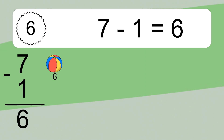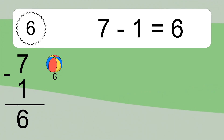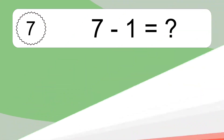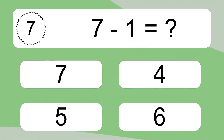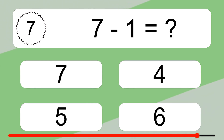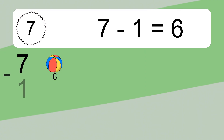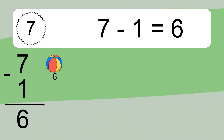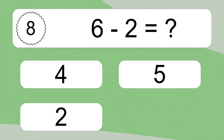7 minus 1 equals 6. Let's count it: 6. 7 minus 1 equals what? 7 minus 1 equals 6. Let's count it: 6. 6 minus 2 equals what?